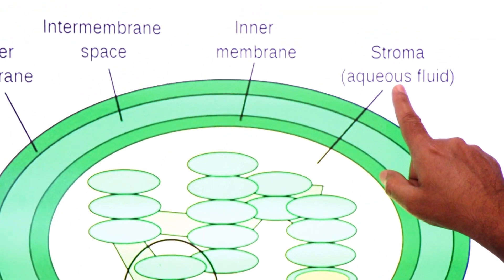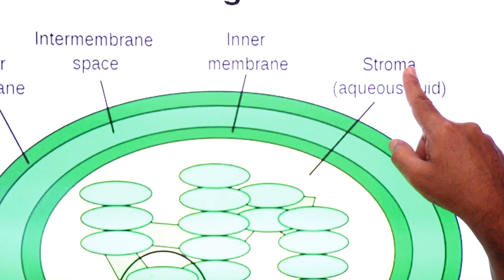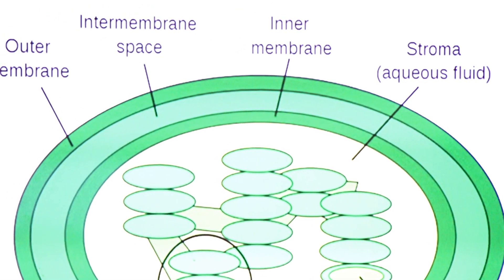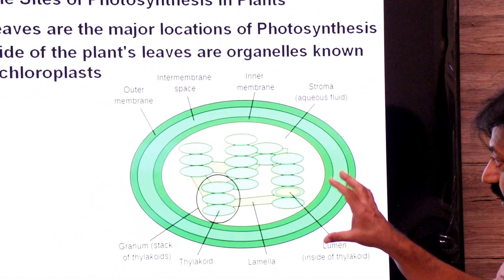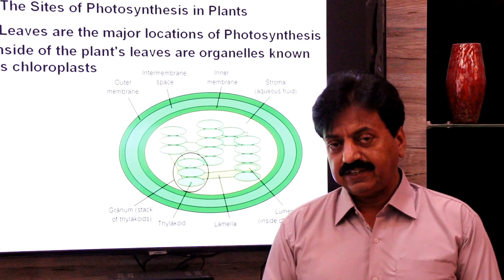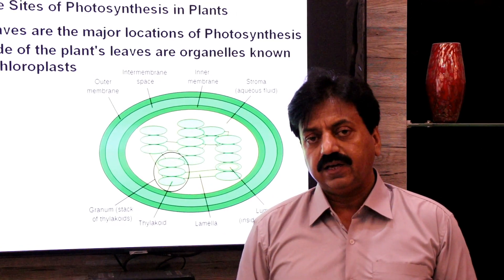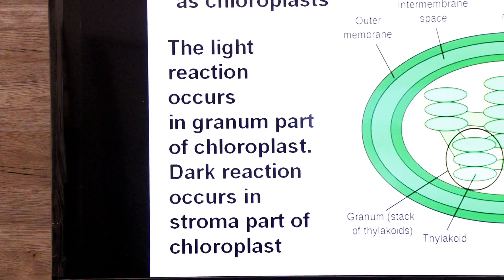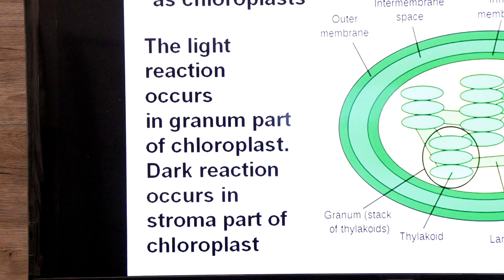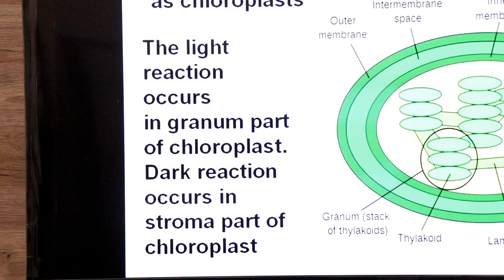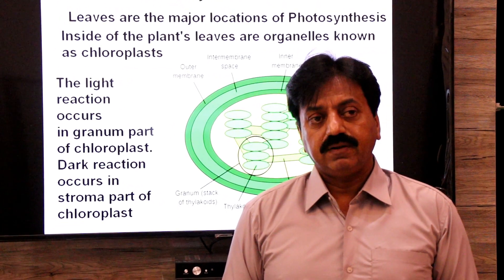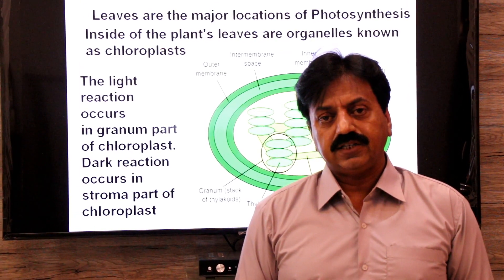Inside the chloroplast there is an aqueous fluid known as stroma. Stroma is the site of the dark reaction, the light-independent reaction, of photosynthesis. To summarize: the light reaction occurs in the grana (a group of thylakoids), and the dark reaction occurs in the stroma of the chloroplast.